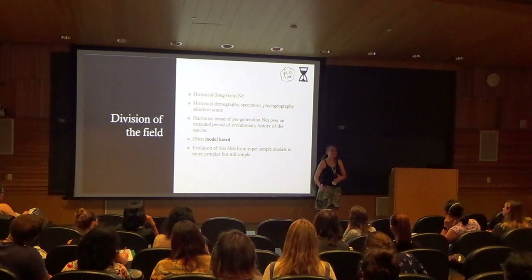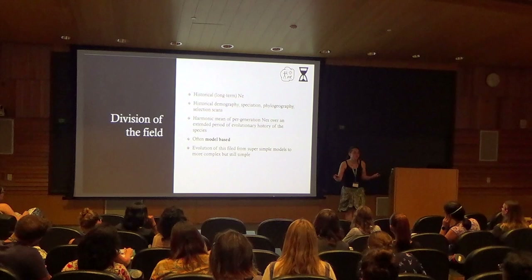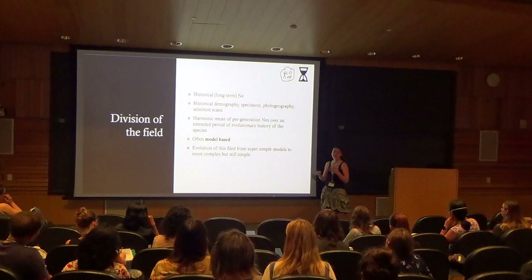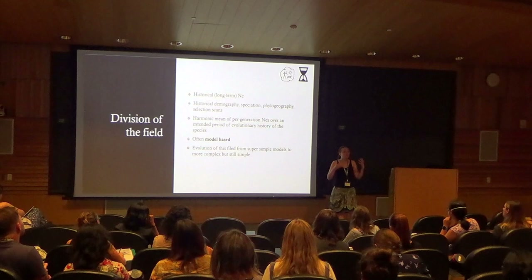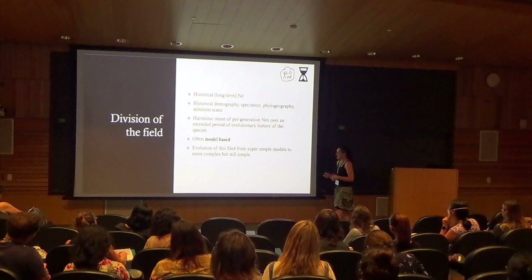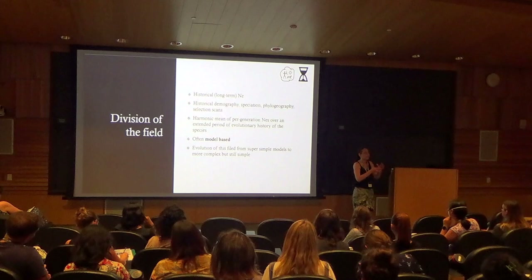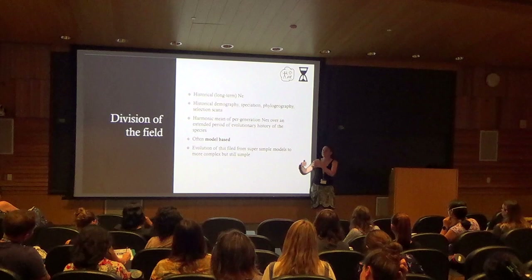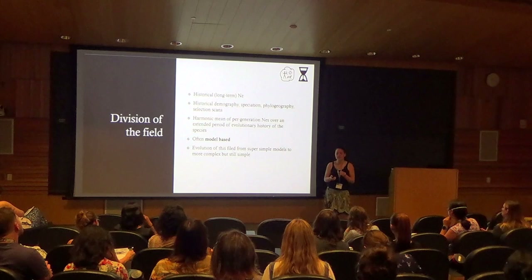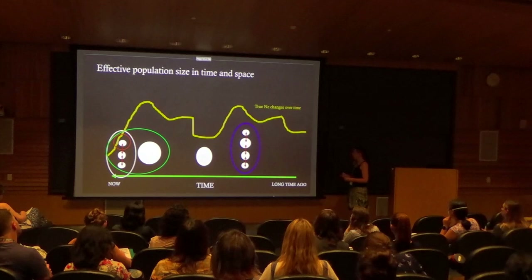On the other part of the spectrum, the historical or long-term Ne is usually used in historical demographic inference, speciation research, or selection scans to provide a null model. The Ne estimated here is usually a harmonic mean over an extended period of evolutionary history. This is very often model-based, and even though the field has evolved from very simple models — single population, closed, no migration — towards more complex models incorporating metapopulation structure, migration rates, and changes in effective population size such as bottlenecks or expanding populations, it's still a simplification of reality.